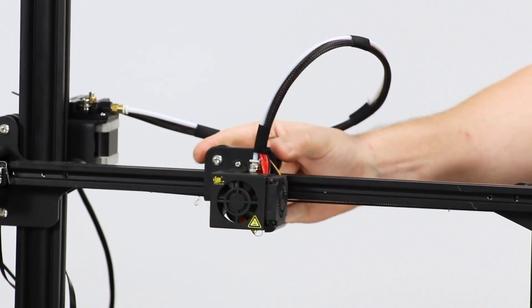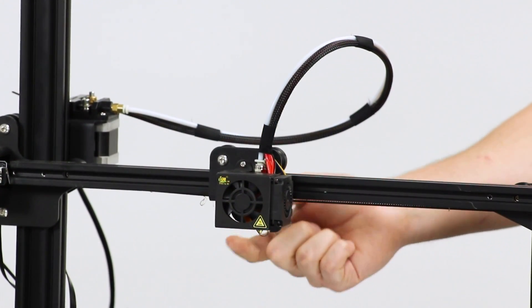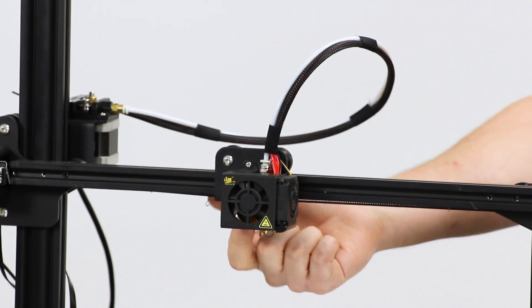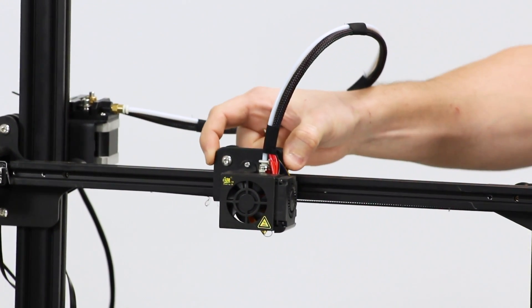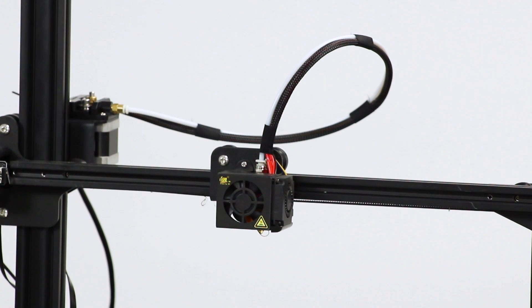The X-carriage here has three wheels, two on top, one on the bottom. And the one on the bottom has the eccentric nut for making sure that that is nice and secure against the rail. There's no wobble or slack there.